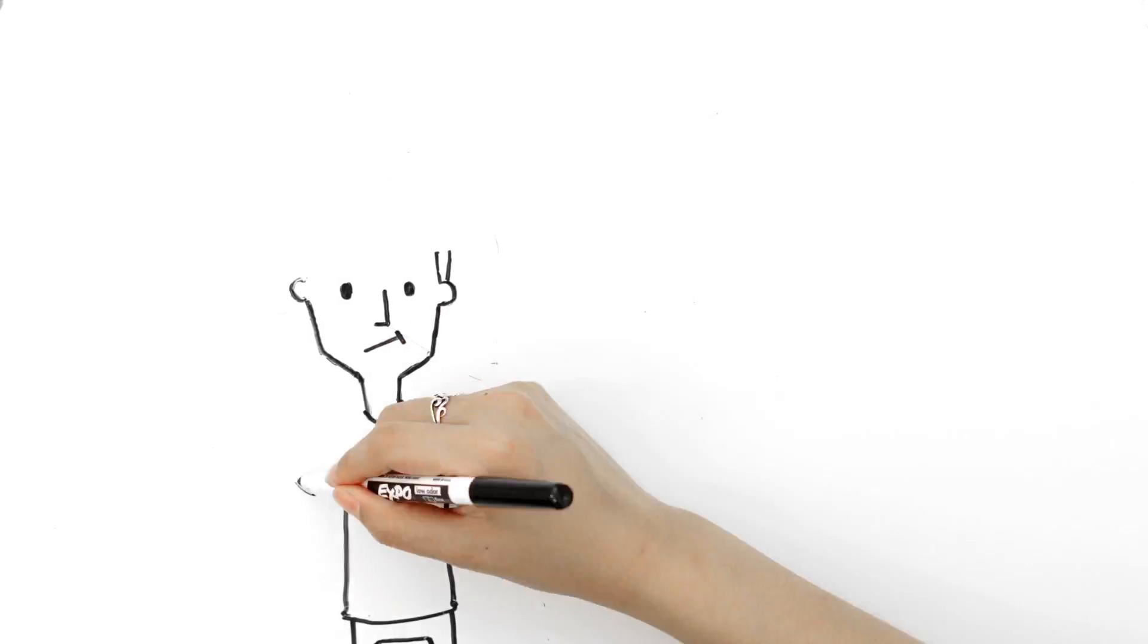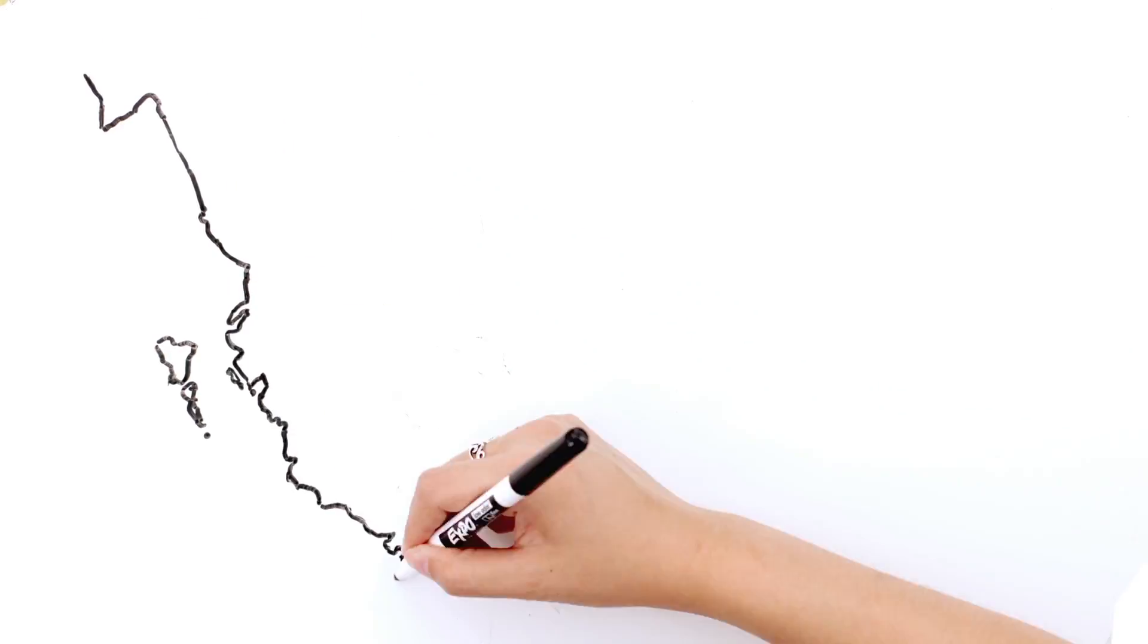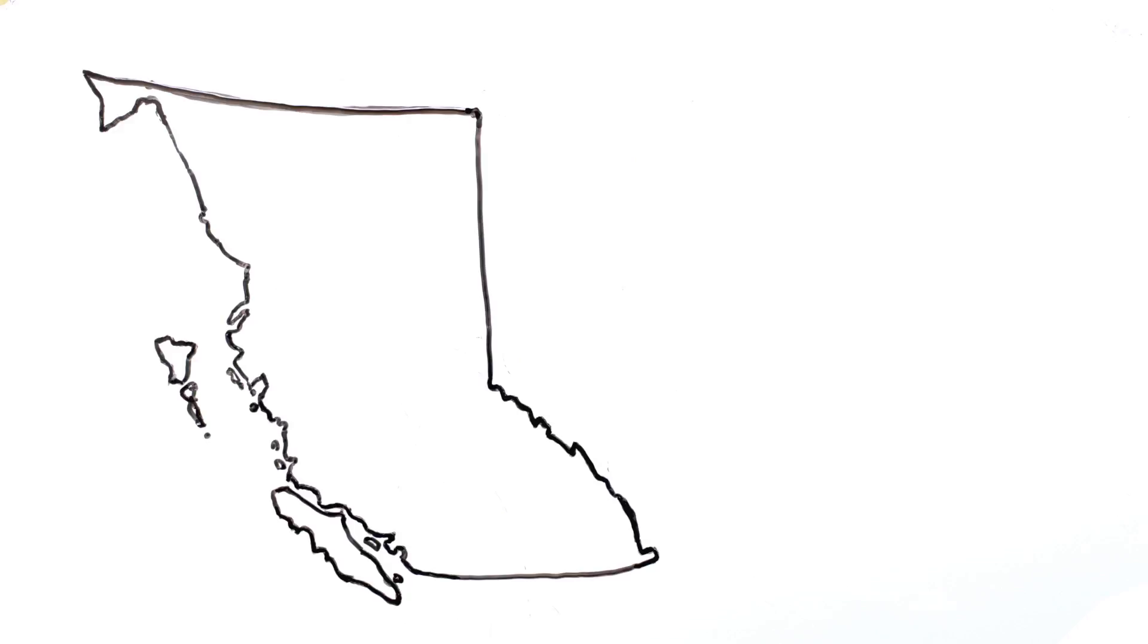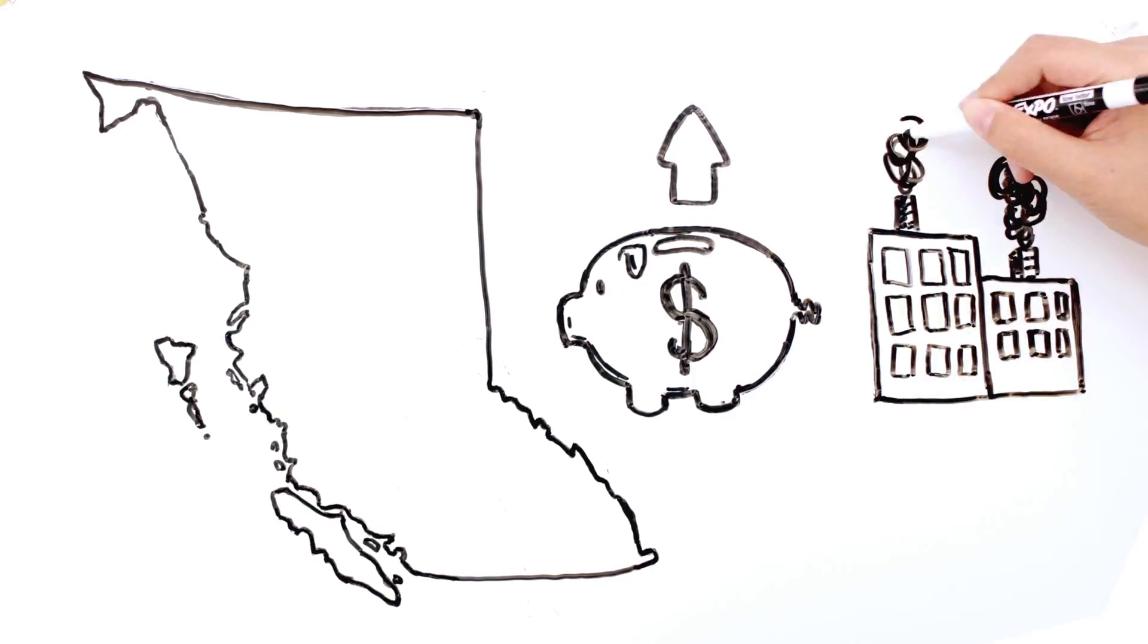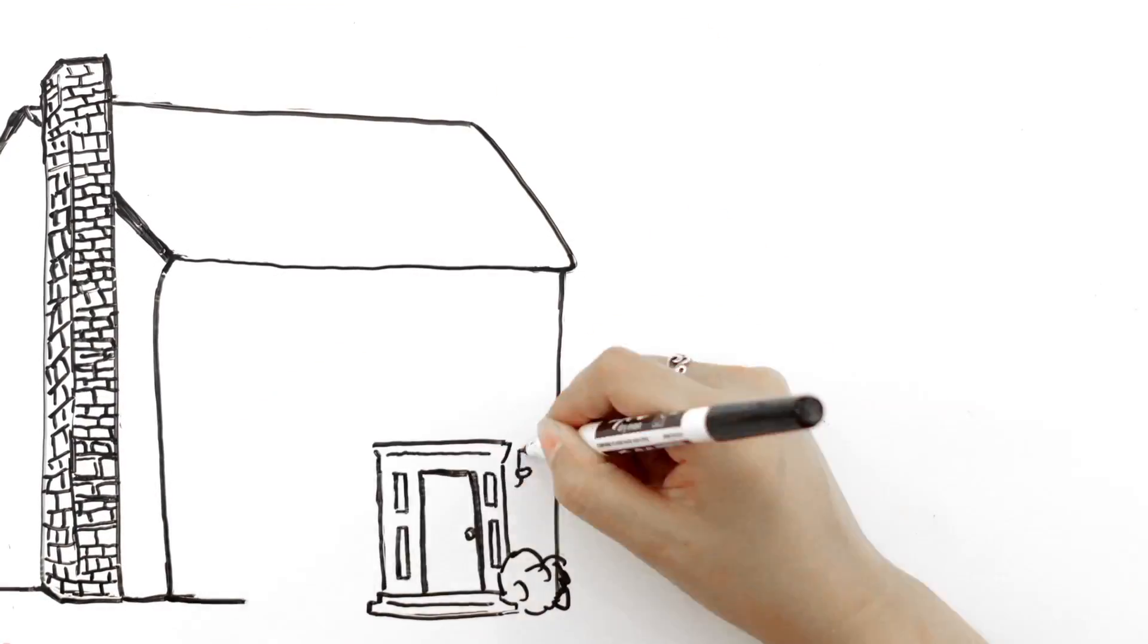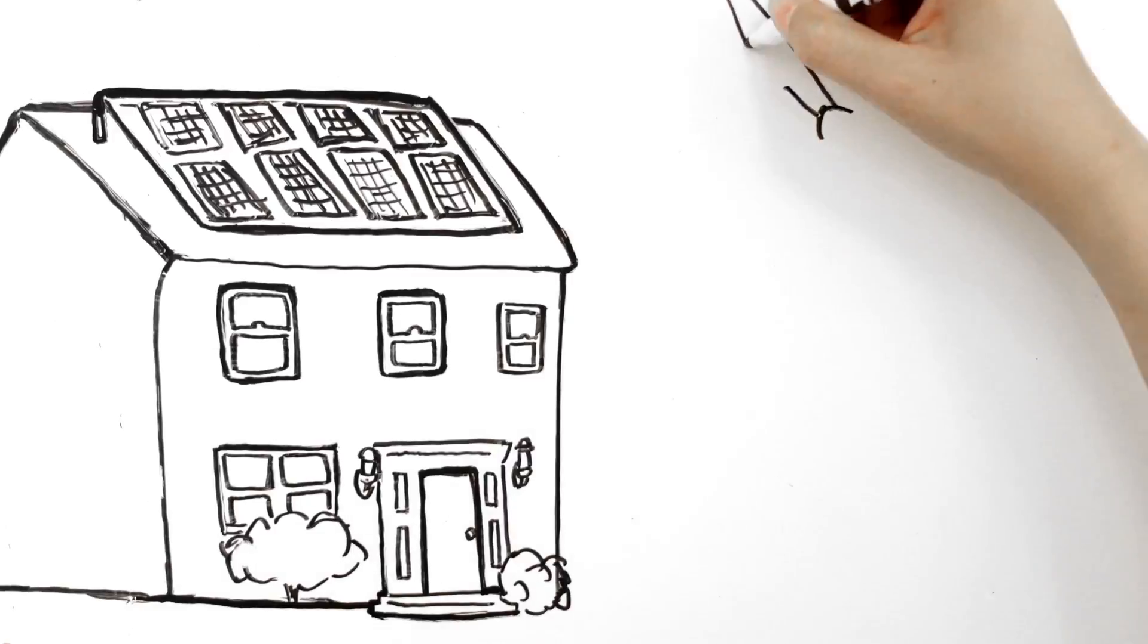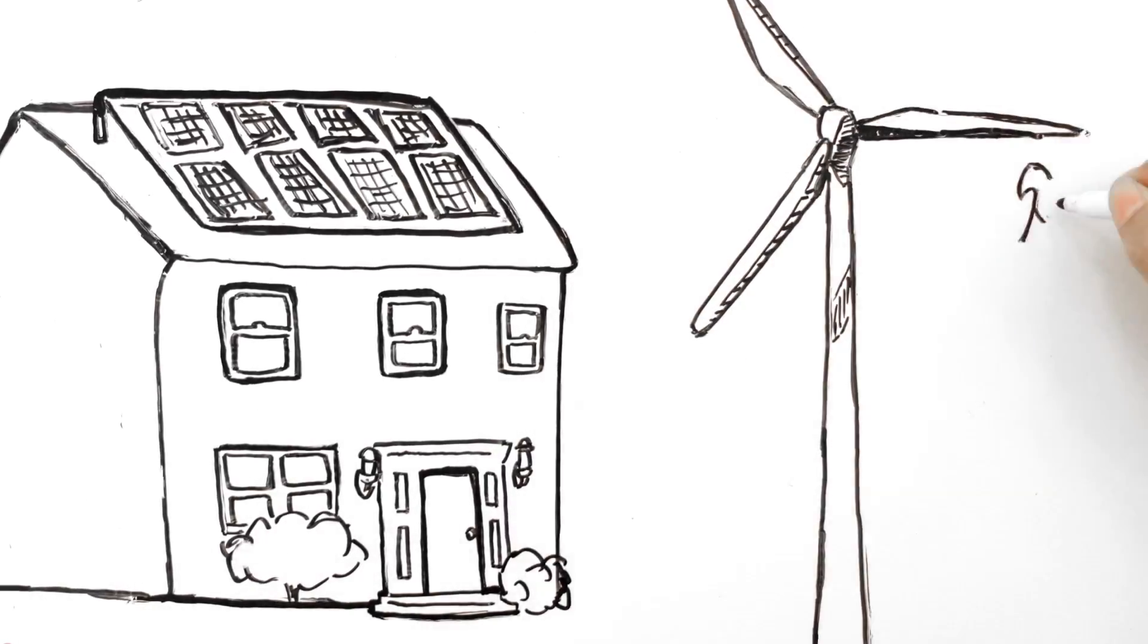But can this realistically be done? Yes. The Canadian province of British Columbia has been doing it since 2008. Their economy has grown while their pollution has decreased. This allows people and businesses to adjust over time, while banks and investors invest in energy-efficient technology with confidence.